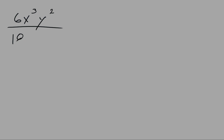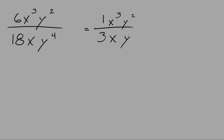For 6x to the power of 3 y to the power of 2 over 18xy to the power of 4, first reduce the fraction 6 over 18: 6 divided by 6 is 1, and 18 divided by 6 is 3. We're left with x to the power of 3 y squared over 3 times x times y to the power of 4. For x: x with no exponent is x to the power of 1, so 3 subtract 1 gives x to the power of 2 on top. For y: the higher power is on the bottom, so cancel the y squared and subtract 2, leaving y to the power of 2 on the bottom. The final answer is x to the power of 2 over 3y to the power of 2.